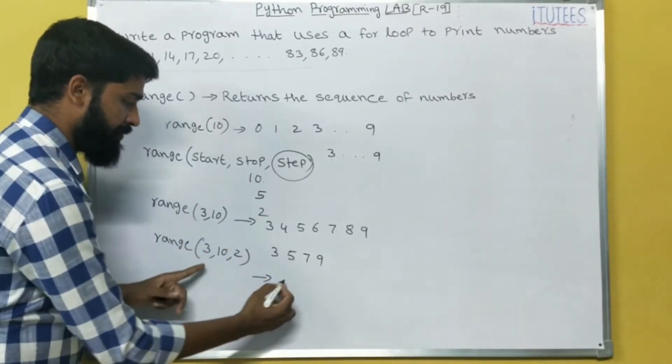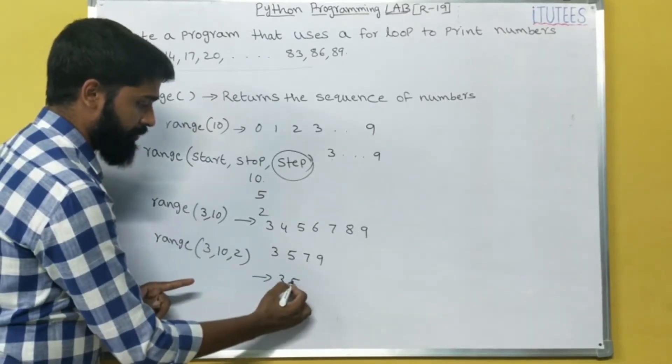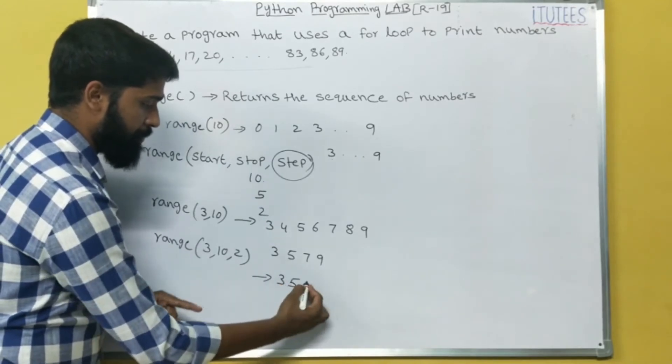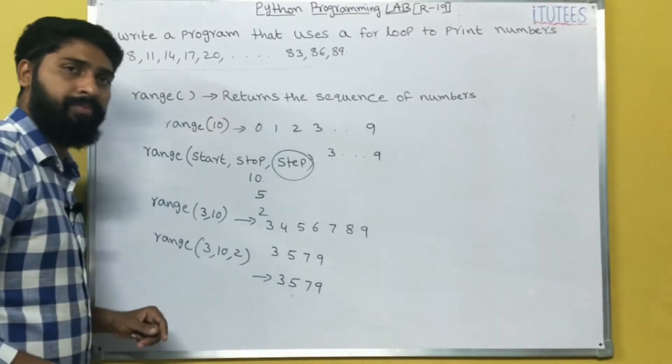Then now what is the output? 3. The step is 2, so 5. Step is 2, so 7. Step is 2, so 9. Okay.